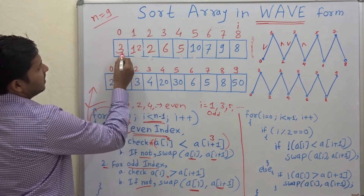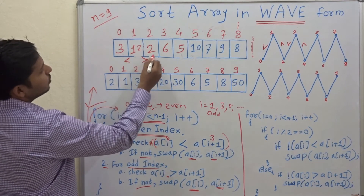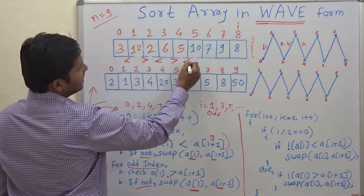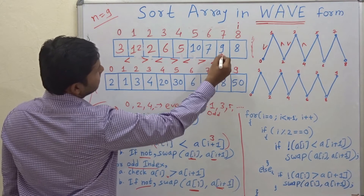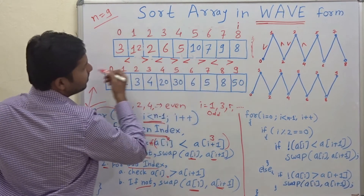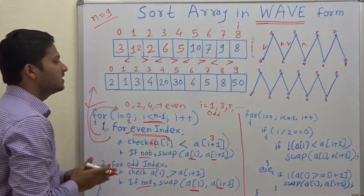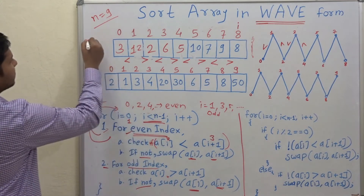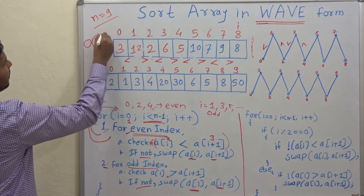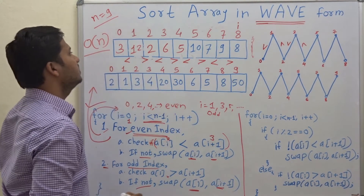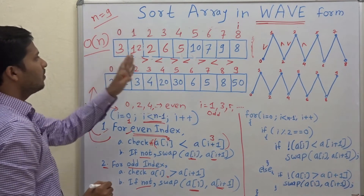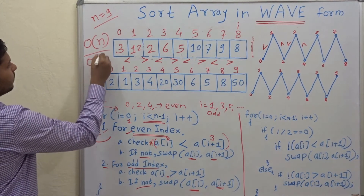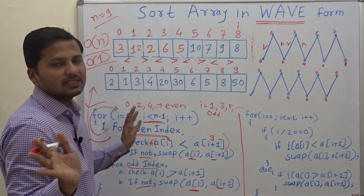When the loop ends, the array is now in waveform: 3 < 12 > 2 < 6 > 5 < 10 > 7 < 9 > 8. The time complexity is O(n) because we check every element once and compare it with the next. The space complexity is O(1) because no extra space is required.